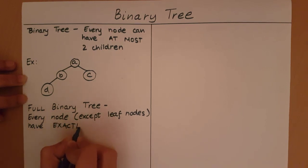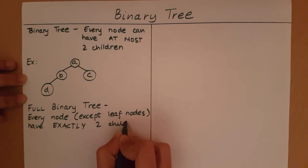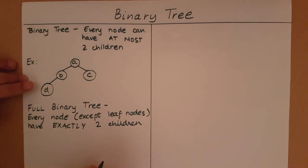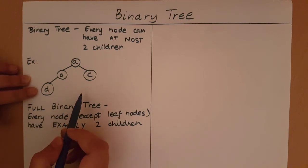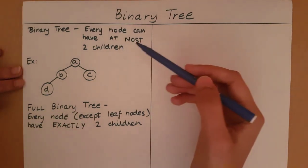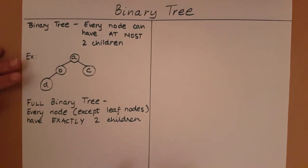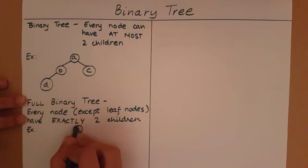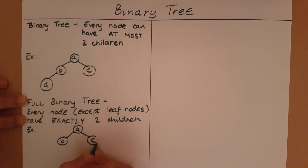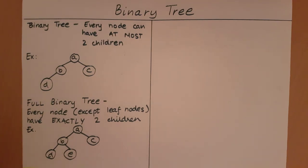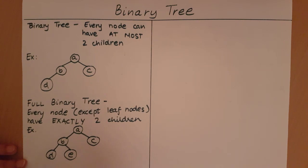Every node except the leaves must have exactly two children. The earlier binary tree example is not a full binary tree — it is a binary tree because it has at most two children, but B only has one child and it is not a leaf node. An example of a full binary tree would be one where A and B are not leaf nodes and both have exactly two children.